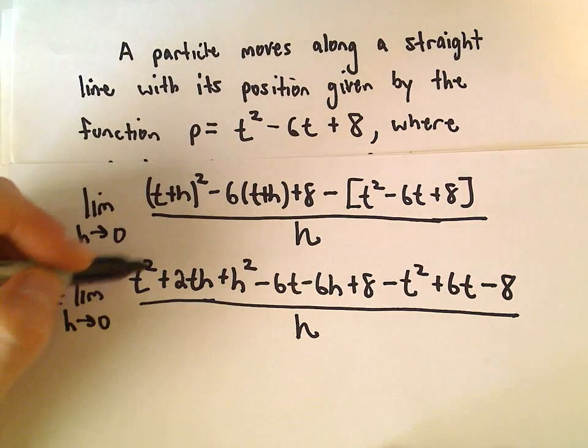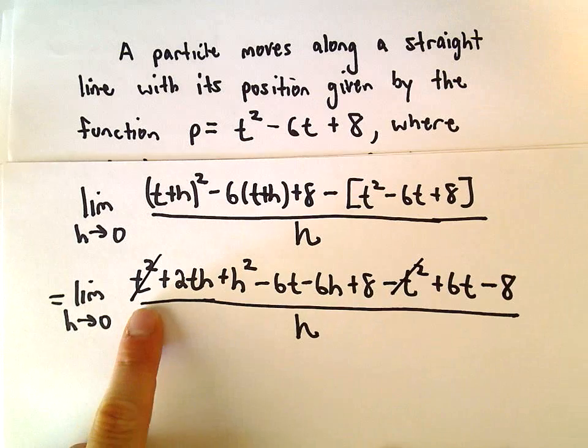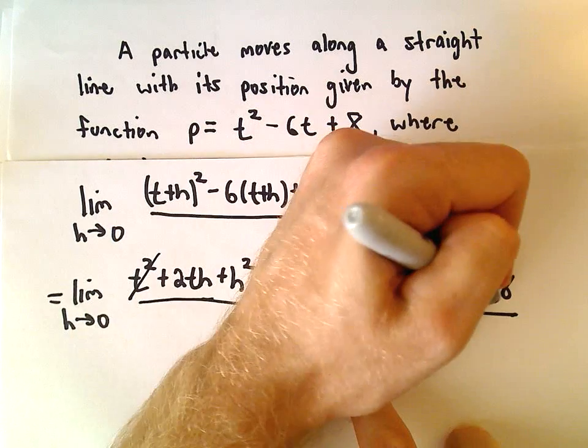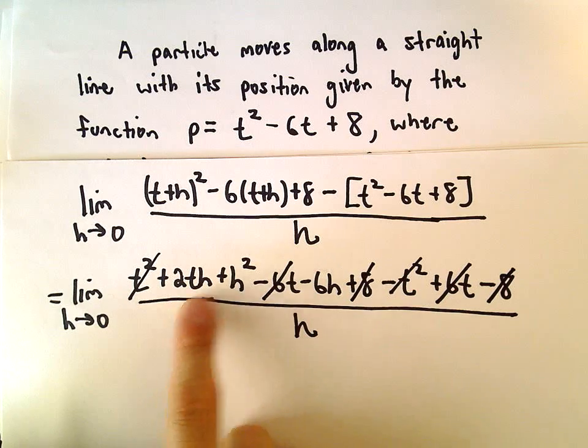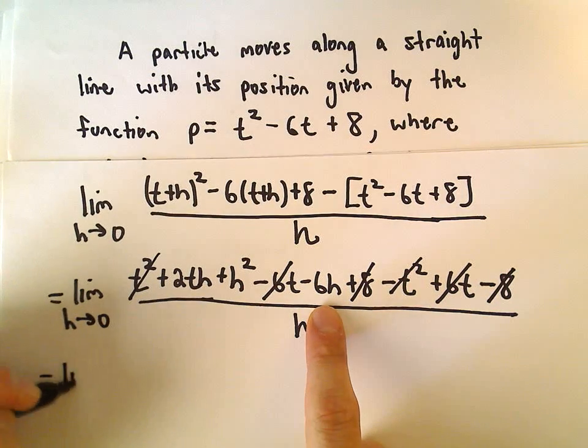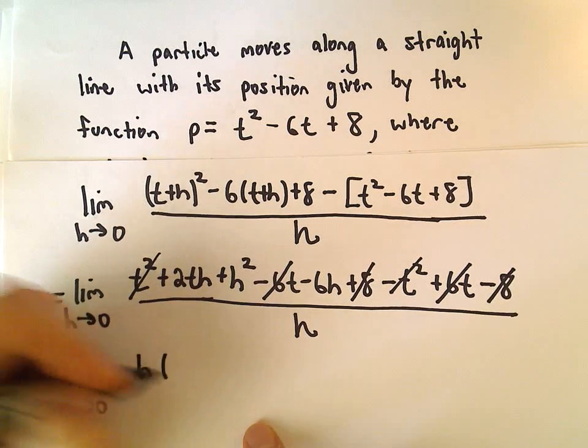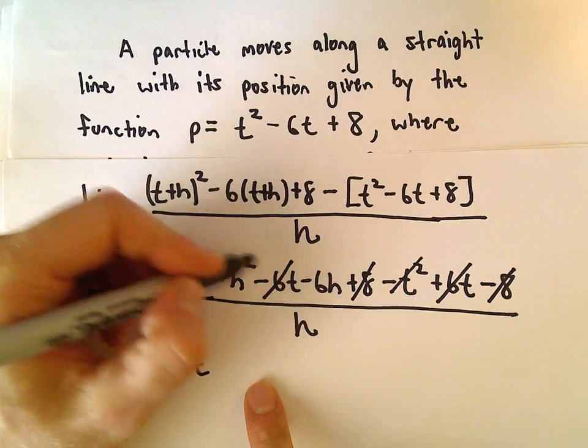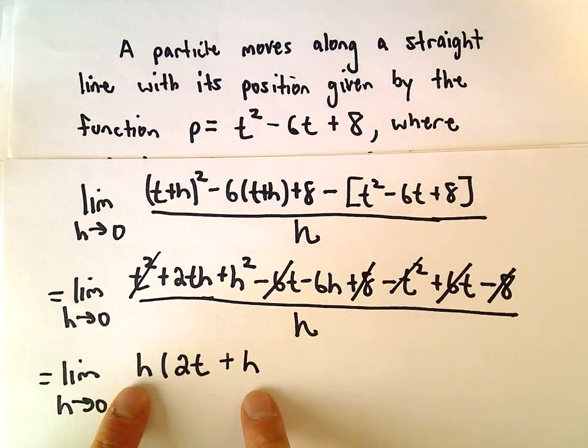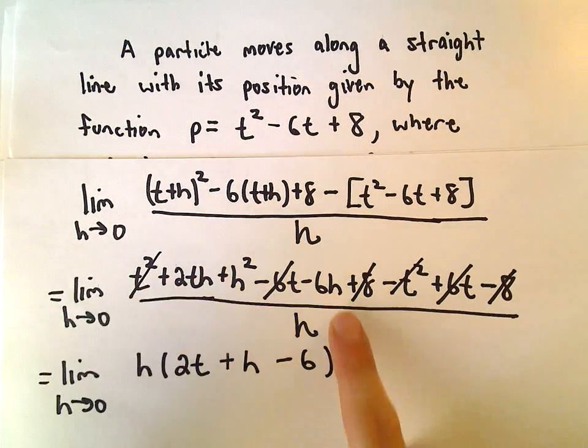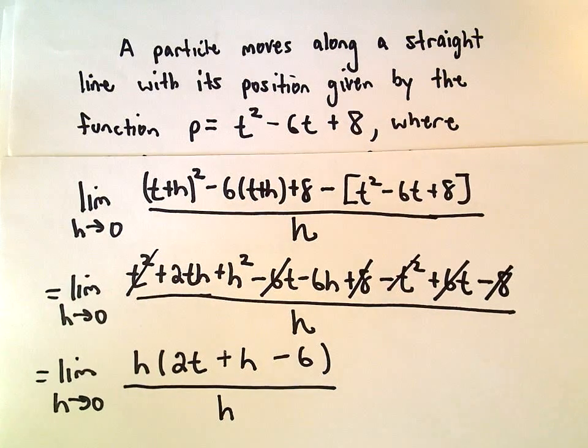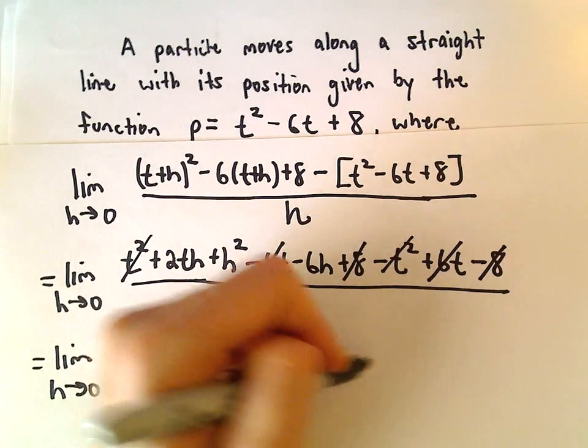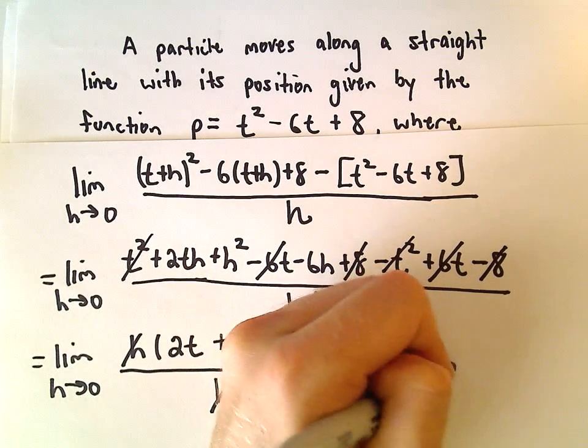And now, the same thing as the other examples, we'll cancel out our like terms. So t squared and negative t squared, we've got negative 6t and positive 6t, we've got a positive 8 and a negative 8, so it looks like we're left with 2t h plus h squared minus 6h. I'm going to factor an h out of the numerator, so h times 2t plus h minus 6, and we're still just dividing by h. So if we cancel, and now we can plug in h equals 0, that'll leave us with 2t minus 6.